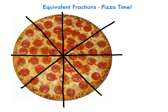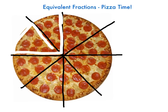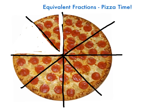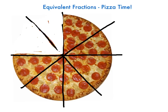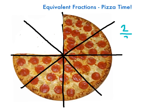Here's a problem. Of my eight slices, my sister Rebecca comes over — she eats a lot — she comes in and eats two pieces. So let's take away our two pieces. She munches away two slices of pizza. She ate two eighths of my pizza — two slices out of eight — which represents two out of eight.